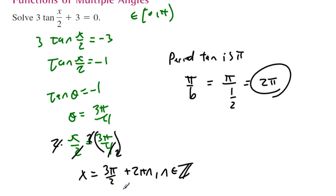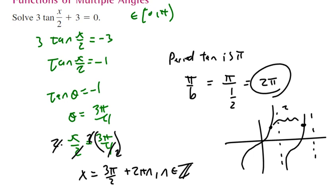This makes more sense if you graph it. If this is our 3π over 2, the distance to the next 3π over 2 is 2π. That's the purpose of adding 2π: when will it reach 3π over 2 again? When we add 2π, not π, because this specific tangent function has x over 2.